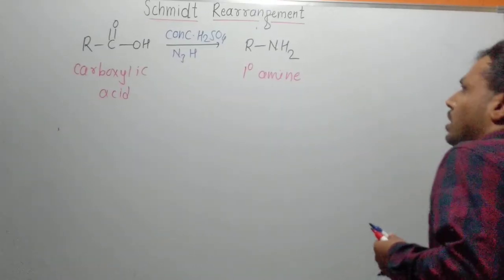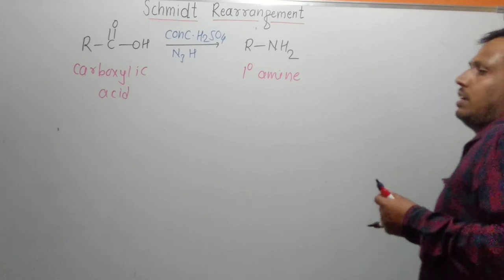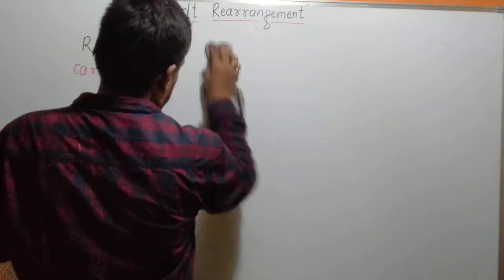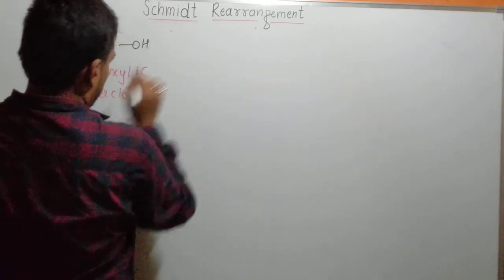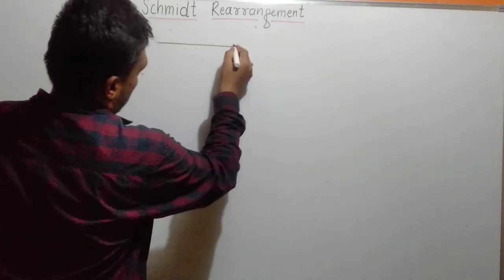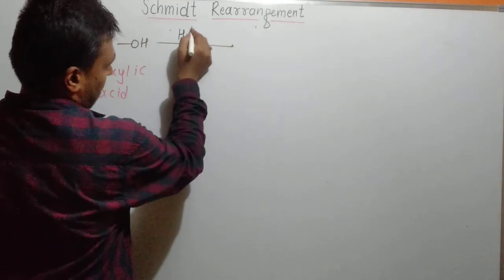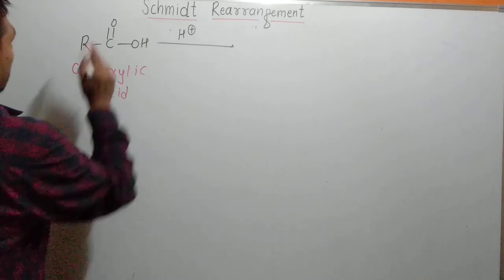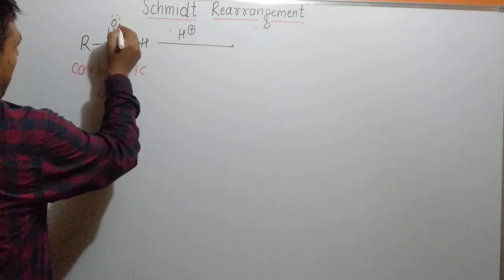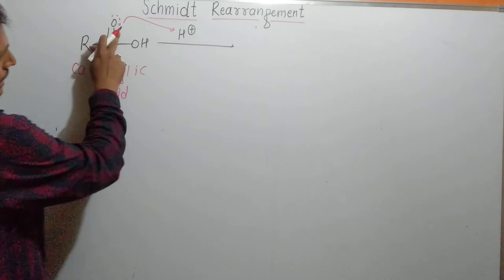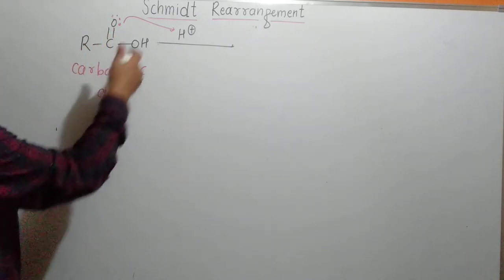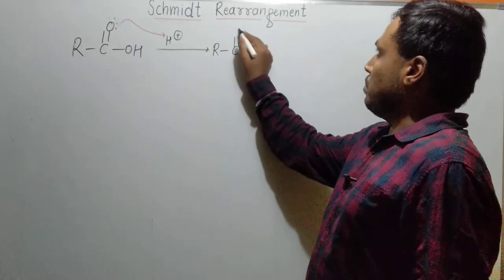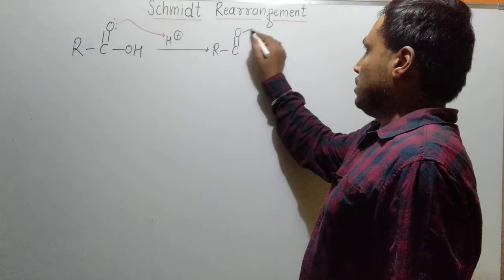Now we'll see the mechanism of this reaction. First of all, we have carboxylic acid in the reaction. This carboxylic acid will donate its electron pair to H⁺. This H⁺ came from the dissociation of H₂SO₄. So the nucleophilic center, that is the electron pair of oxygen, will attack on the electrophilic center, that is H⁺. So hydrogen is now attached to the carbonyl oxygen.